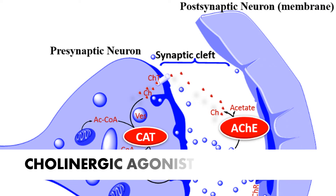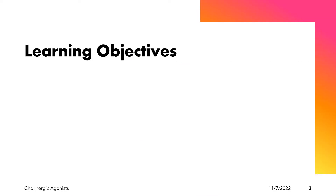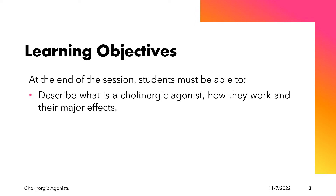Welcome to our lecture on drugs acting on cholinergic neurotransmission. We are going to start with the cholinergic agonists. At the end of this lecture, students must be able to describe what a cholinergic agonist is, how they work, and their major effects in the different body systems.